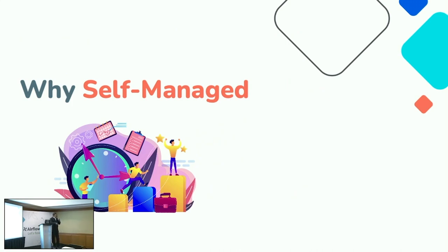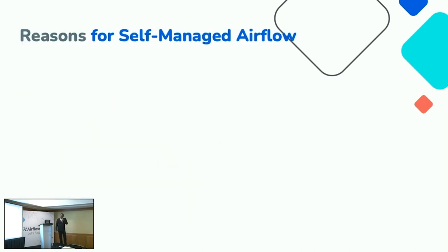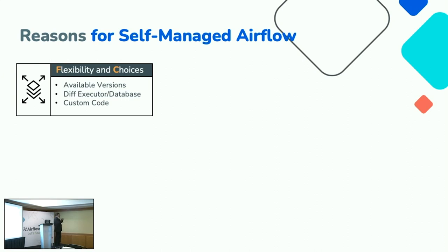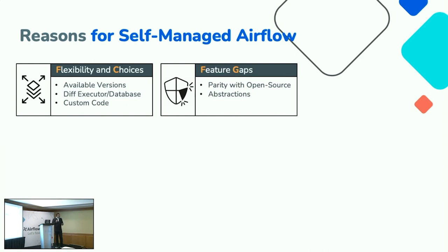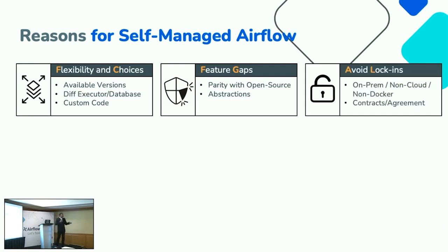Yet you might still want to deploy your own self-managed Apache Airflow. Why? I categorize the reasons into different buckets. The first is flexibility and choice — maybe you're running an older version not supported by any provider, or you want to fork the open source code and make changes. The second is feature gaps — managed providers give you abstraction over core components that may not fit your needs.